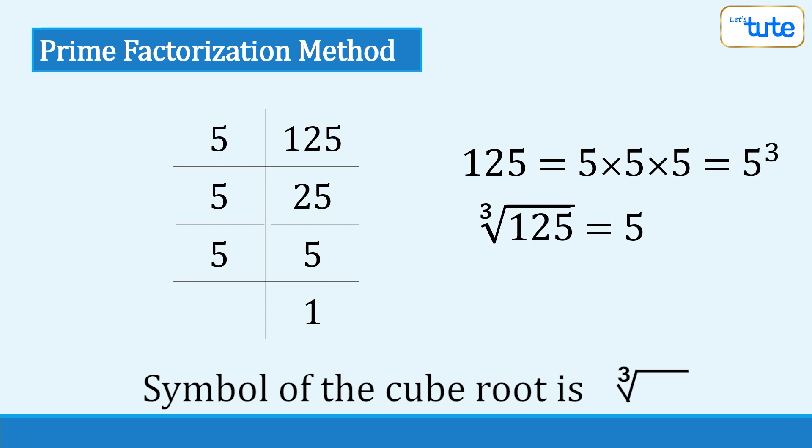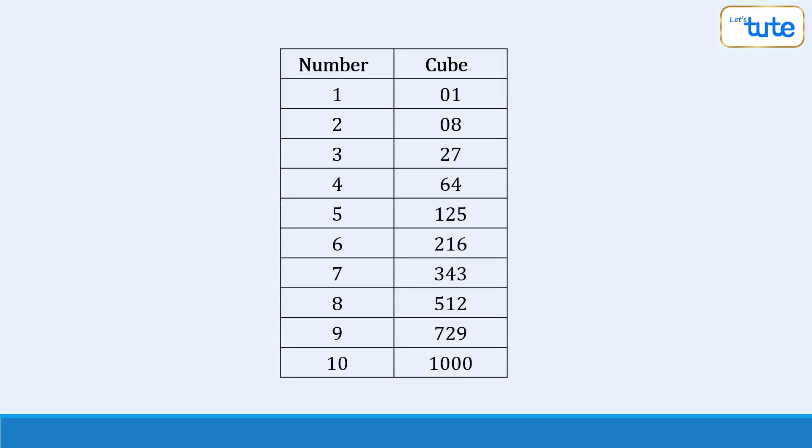The first and most important thing is we must recall cubes of numbers from 1 to 10. Now, if we closely observe these numbers and their cubes, for the numbers 1, 4, 5, 6 and 9, the cube's unit digit remains the same, whereas the unit digit for 2's cube is 8 and the unit digit for 8's cube is 2 and the same goes for numbers 3 and 7.